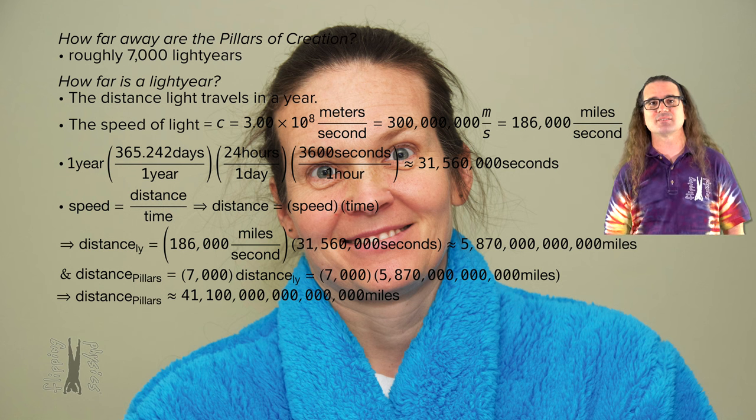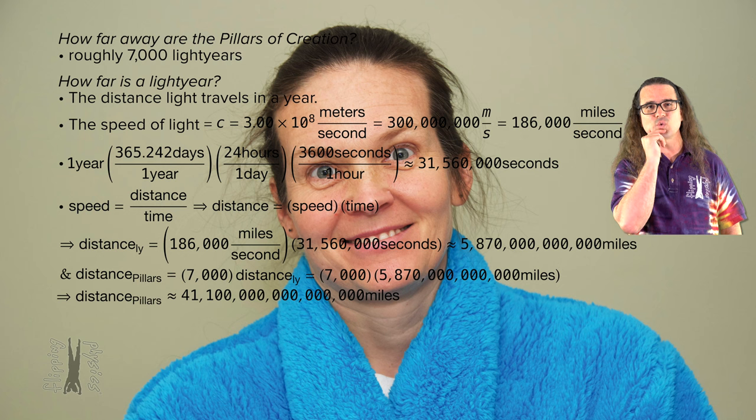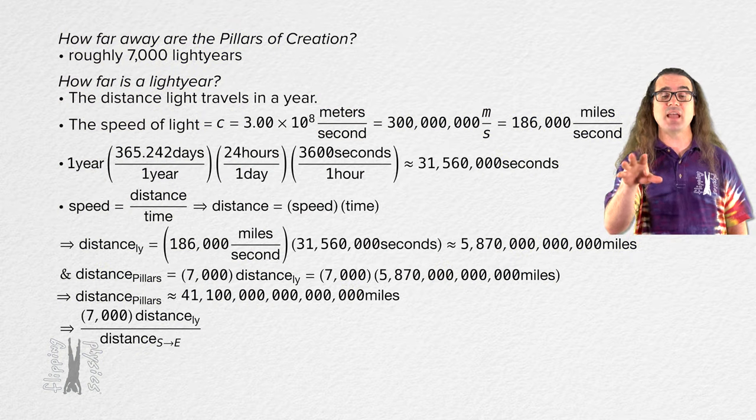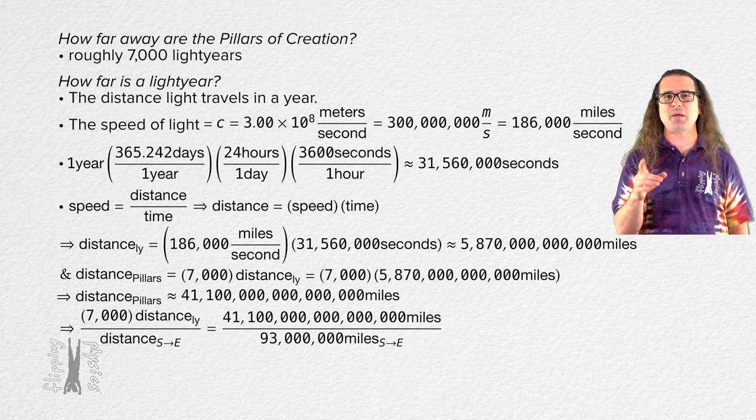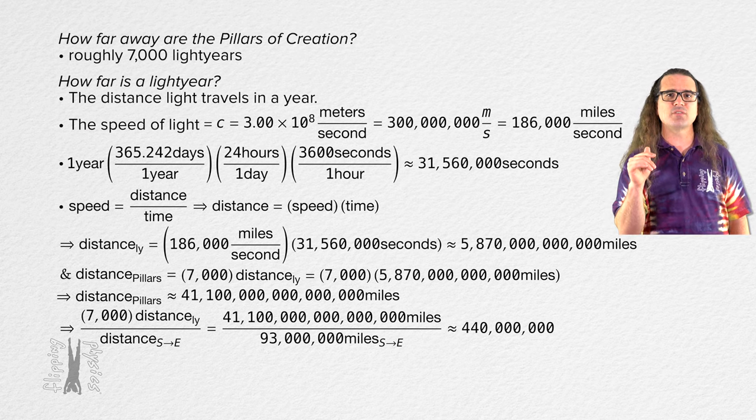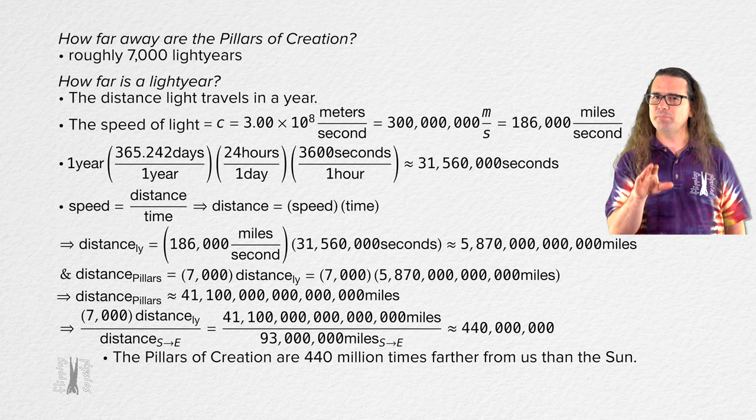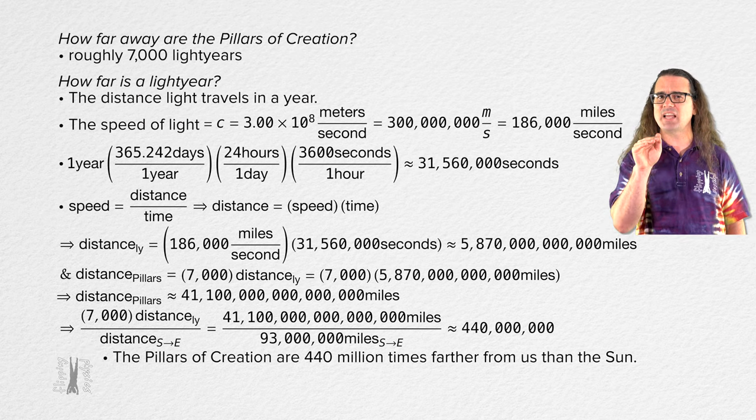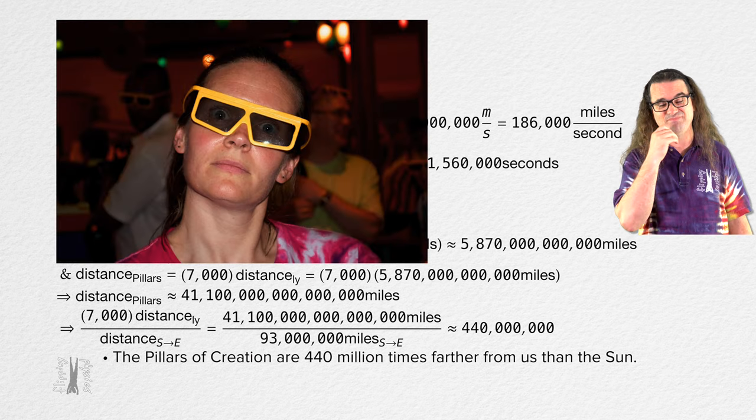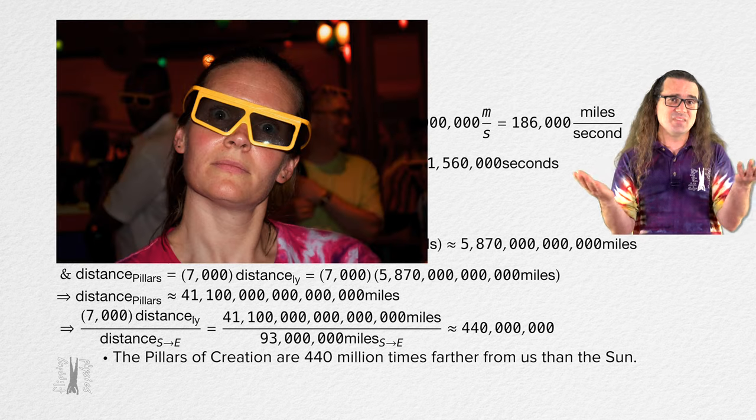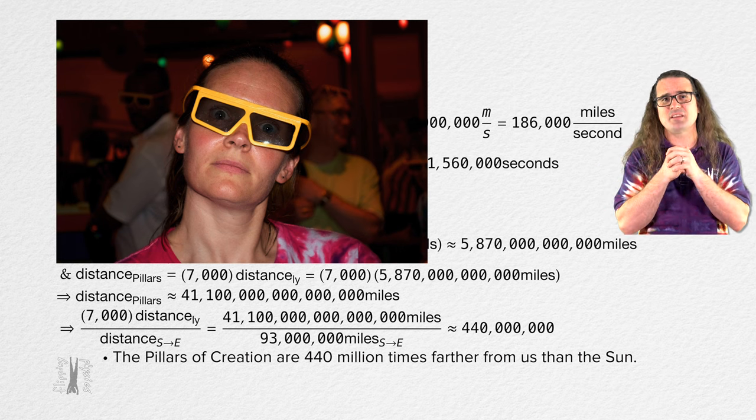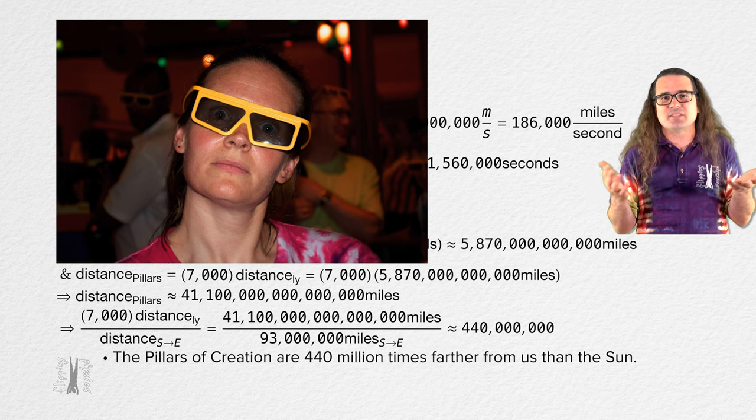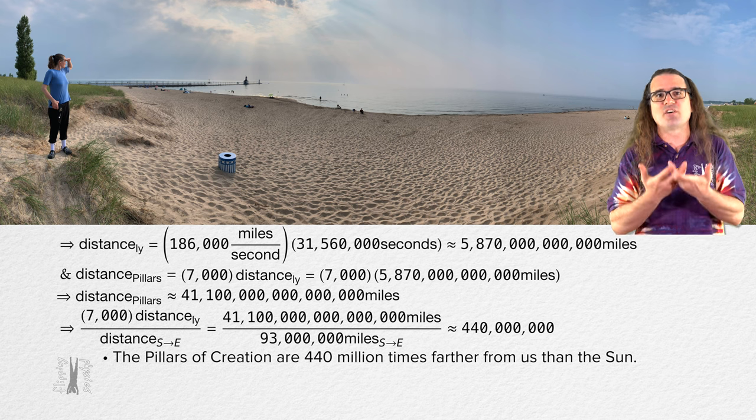I know Kate, that's still kind of just a number and it's hard to really know what that means. So let's compare that to the distance between the sun and the earth. If we divide the distance to the pillars of creation by the average distance from here to the sun, we get 440 million. In other words, the pillars of creation are 440 million times farther away from us than the sun. Yeah. Kate, I know the pillars of creation are roughly 440 million times farther away from us than the sun helps the distance make some sense. Yep, it is far away.